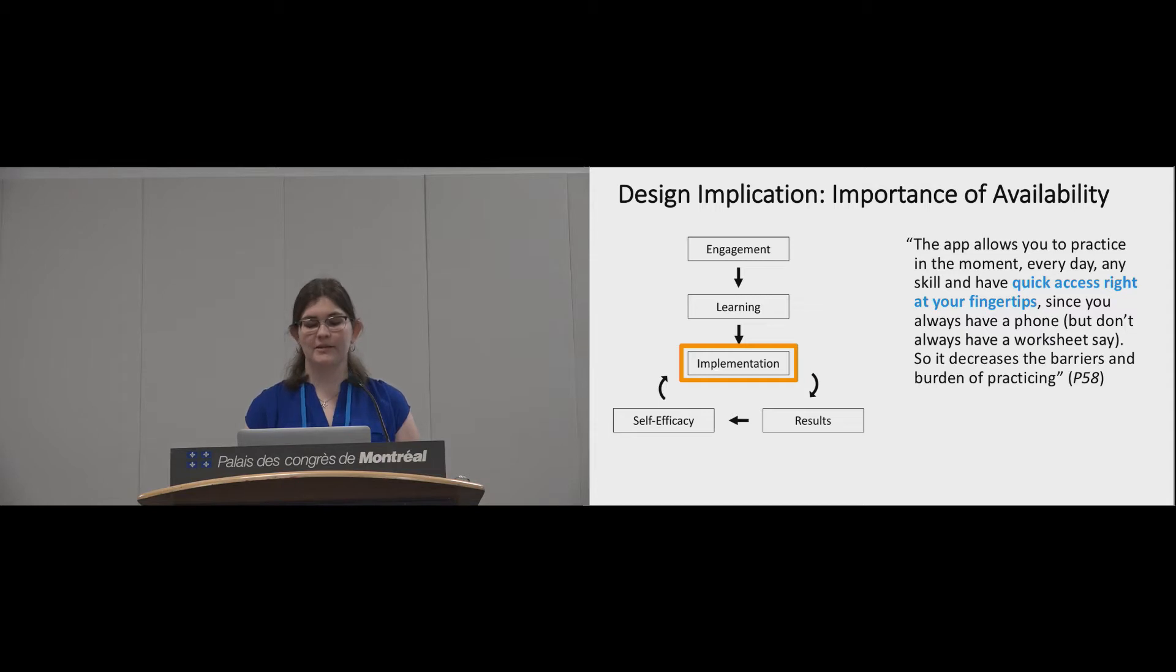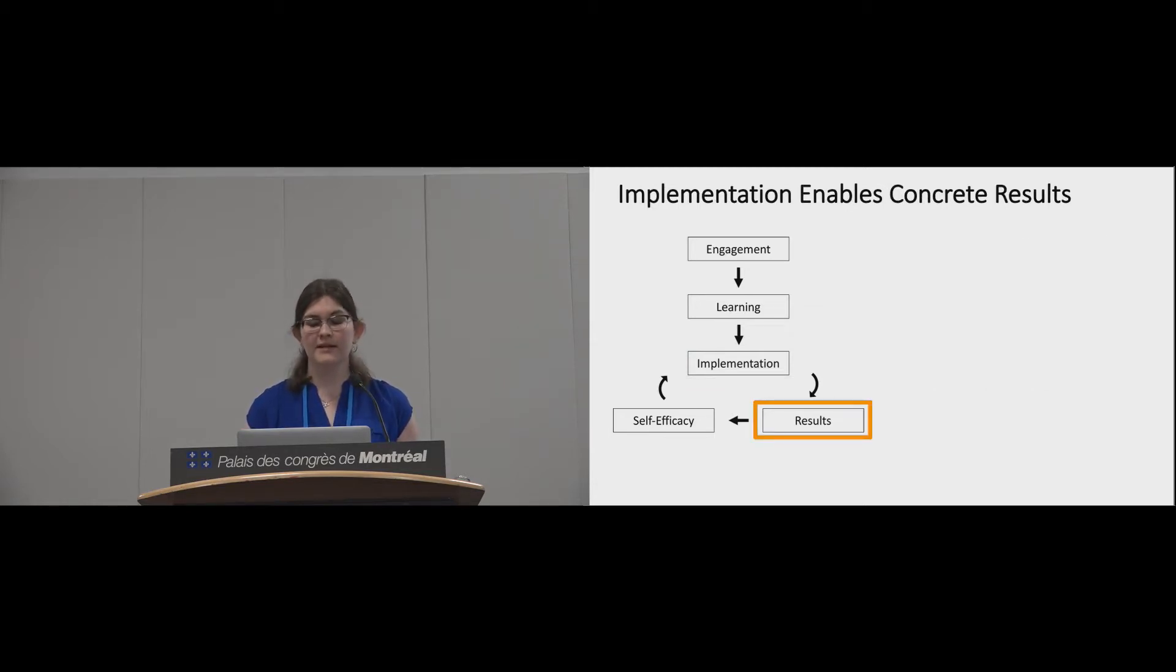Because availability was so essential to skills implementation, an important design implication of our findings is the need for tools designed to support mental health to include mobile components so people can use them in the moment they need them.